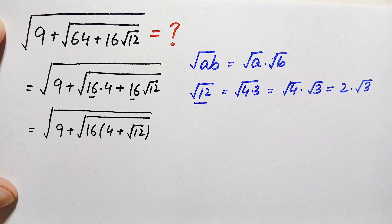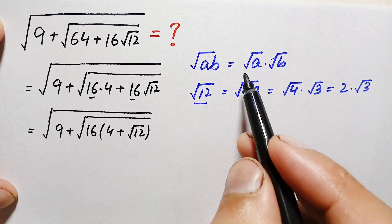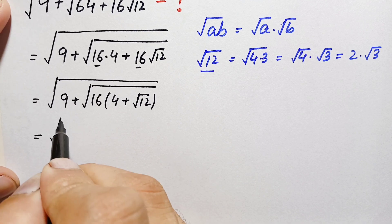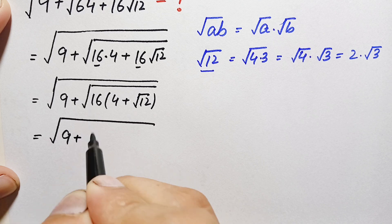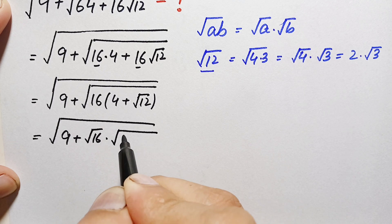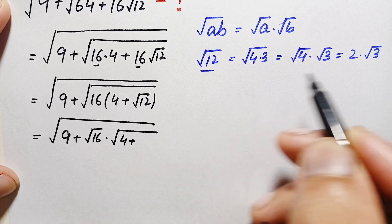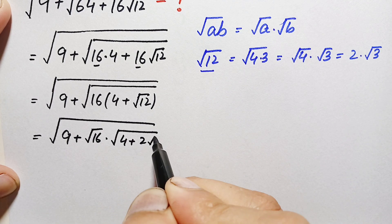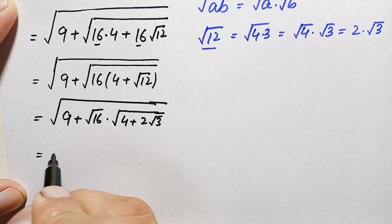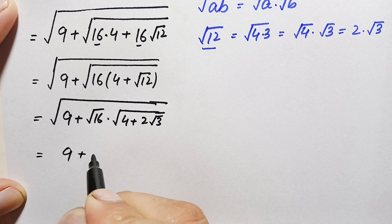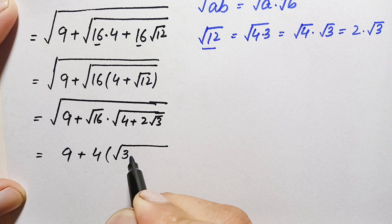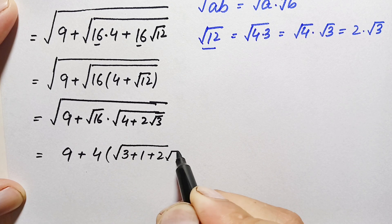We replace square root of 12 with 2 times square root of 3. Using the result square root of a times b equals square root of a times square root of b, square root of 16 is simply 4. So this becomes the whole square root of 9 plus 4 times, in brackets, 4 plus 2 times square root of 3. We can add the terms inside: 4 plus 1 plus 2 times square root of 3, giving 9 plus 4 times, in brackets, 3 plus 1 plus 2 times square root of 3.